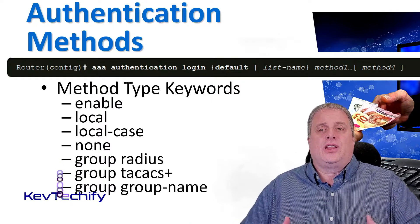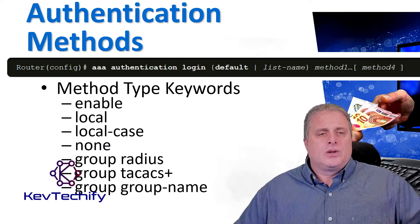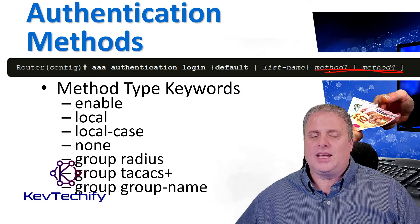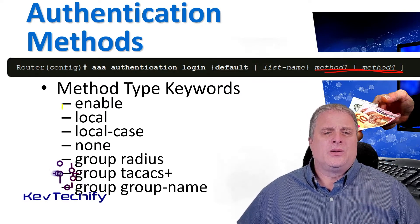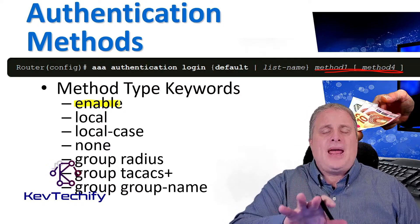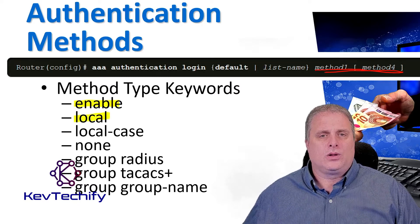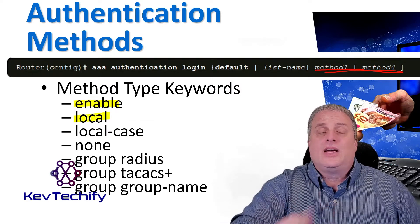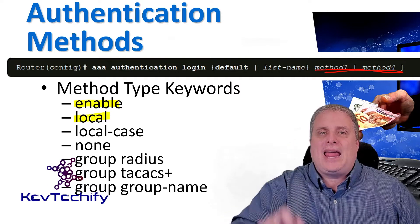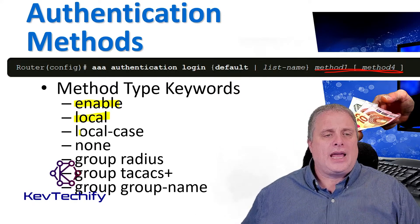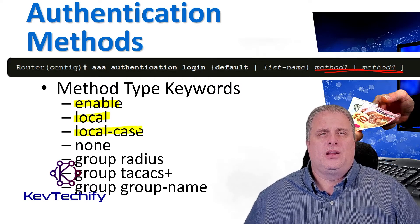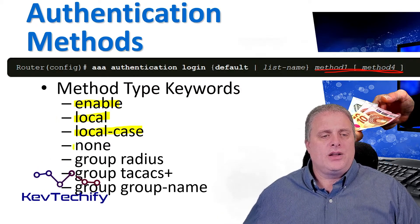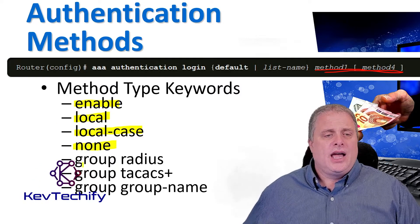To specify that a user can authenticate using the enable password, use enable. Here's a list of the common methods. The first method is enable — this uses the enable password for authentication. The next one is local — this uses the local usernames database, the users you created on that device. Note that you have to create those on every device you want to give access to. Local-case is very similar to the local method, but it uses a case-sensitive username. If you have none as the method, it's not going to use any authentication.